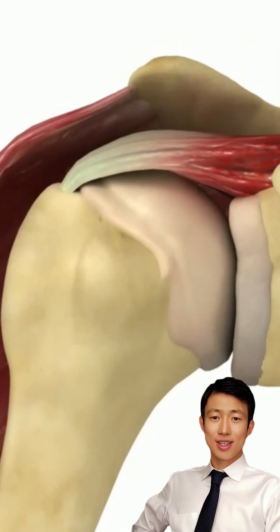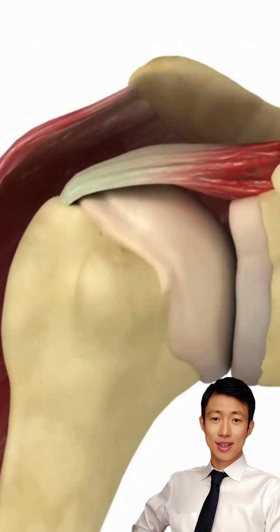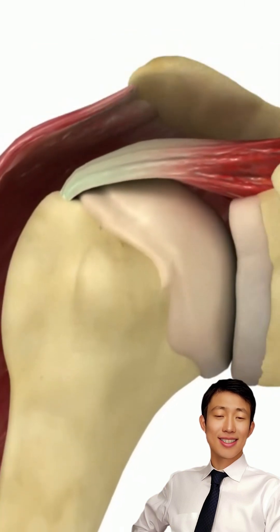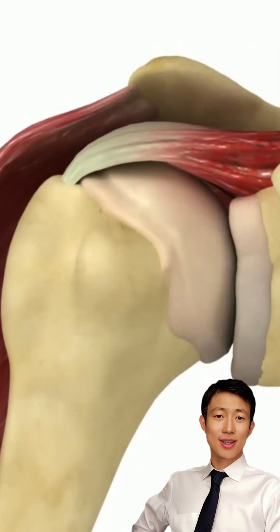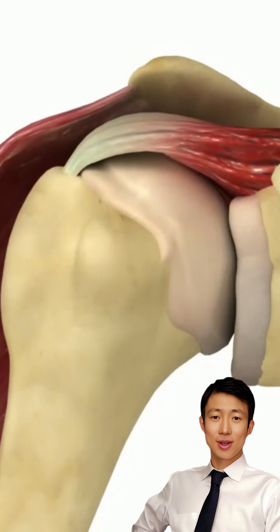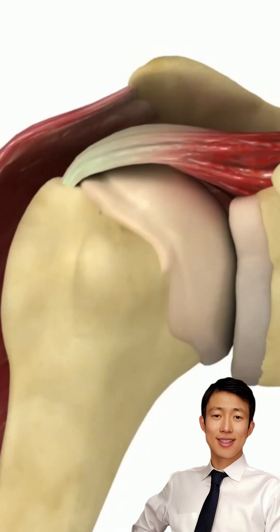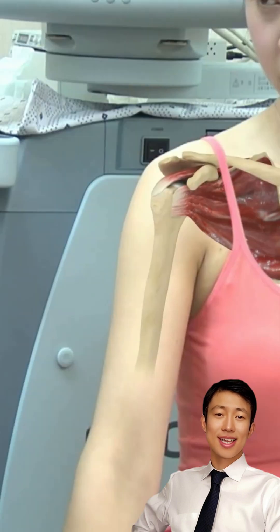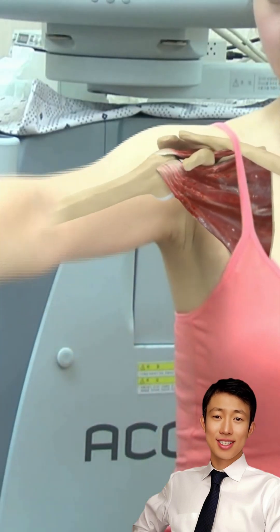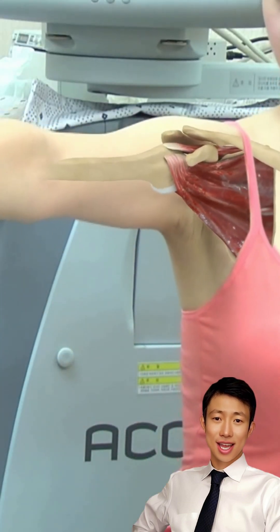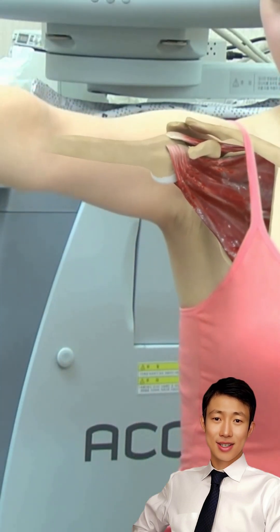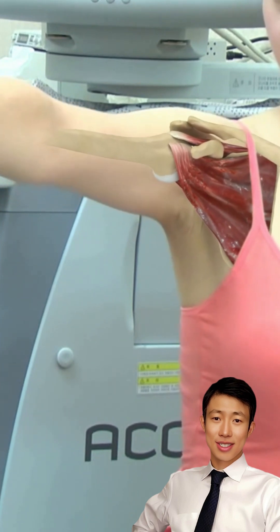The supraspinatus originates from the supraspinous fossa and inserts on the superior facet of the greater tuberosity. It is crucial for initiating abduction and maintaining glenohumeral congruency.